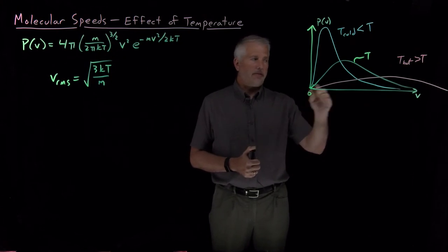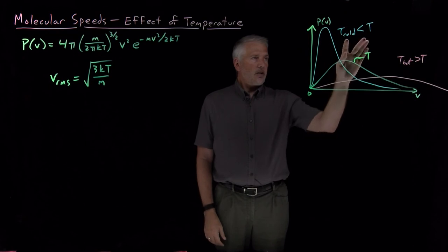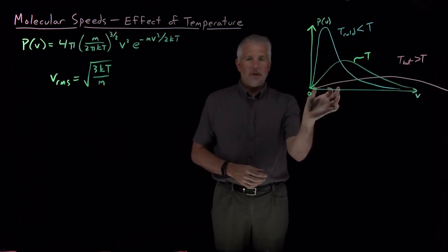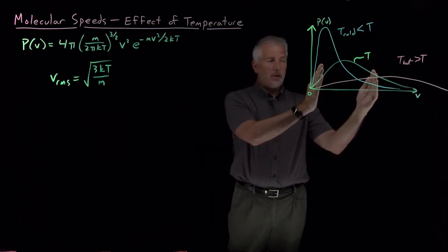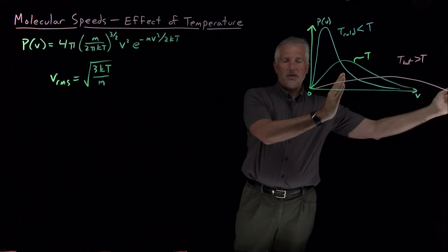I have 100% probability of having some speed, but what this shows us is at cold temperatures, I have a relatively narrow band of speeds at which I'm likely to find the molecules. At intermediate temperatures, that range of speeds at which I'm likely to find the molecule has increased, and at hot temperatures, the range has increased considerably.